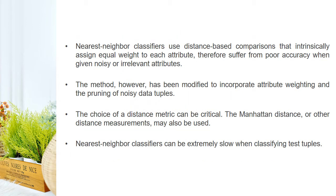Nearest neighbor classifiers use distance-based comparisons that intrinsically assign equal weight to each attribute, and therefore suffer from poor accuracy when given noisy or irrelevant attributes. The method has been modified to incorporate attribute weighting and the pruning of noisy data tuples. The choice of distance metric can be critical — Manhattan distance or other distance measures can also be used. Nearest neighbor classifiers can be extremely slow when classifying test tuples.